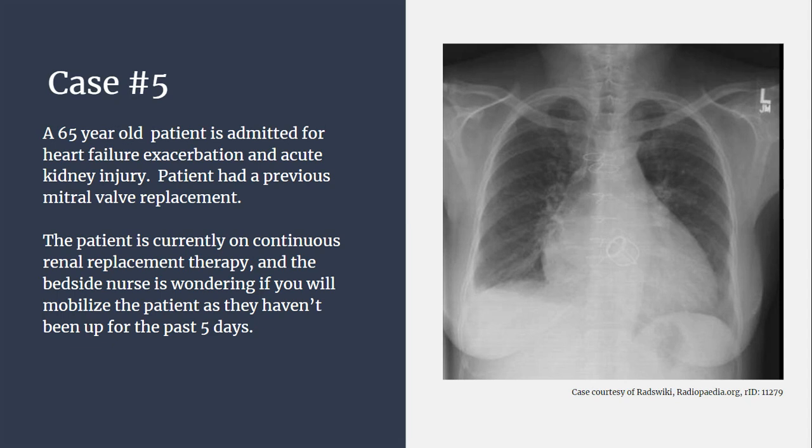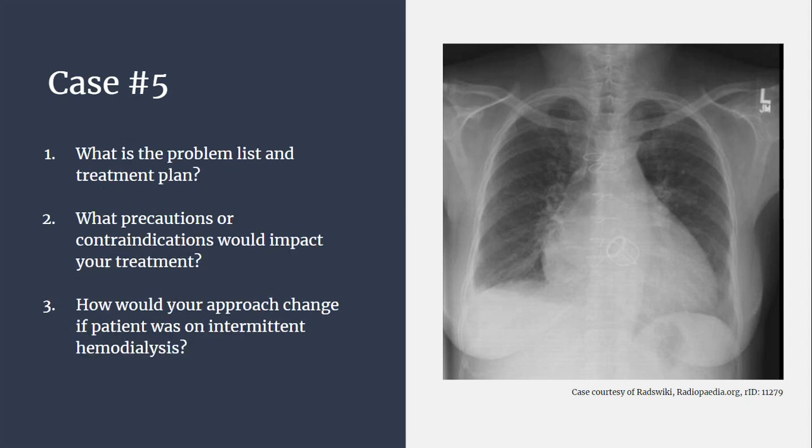Note if you can see the cardiomegaly, the previous surgeries on the valve replacement, and anything else that you note on the chest x-ray. What is the problem list and treatment plan? What precautions or contraindications would impact your treatment? And how would your approach change if the patient was on intermittent hemodialysis? I'm hoping that you'll take some time to understand the difference between dialysis in the ways that you traditionally know how it works compared to CRRT, or continuous renal replacement therapy, which is essentially dialysis.